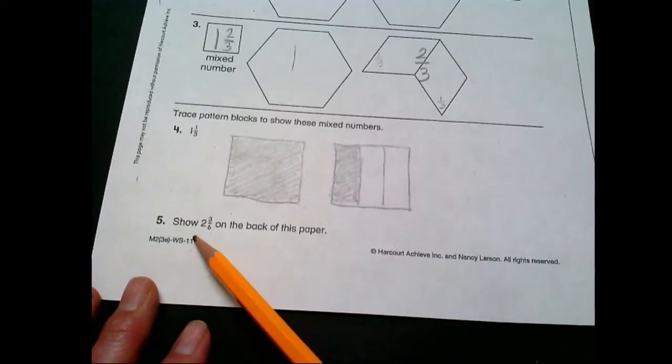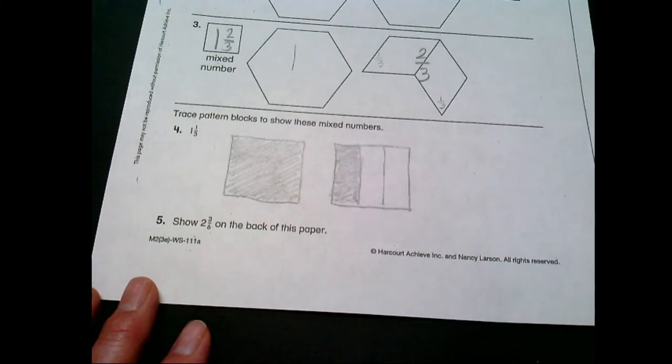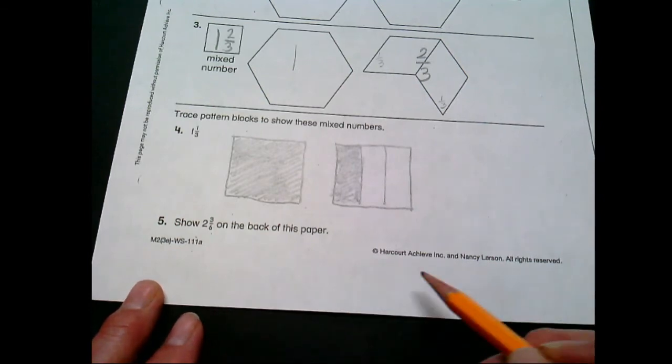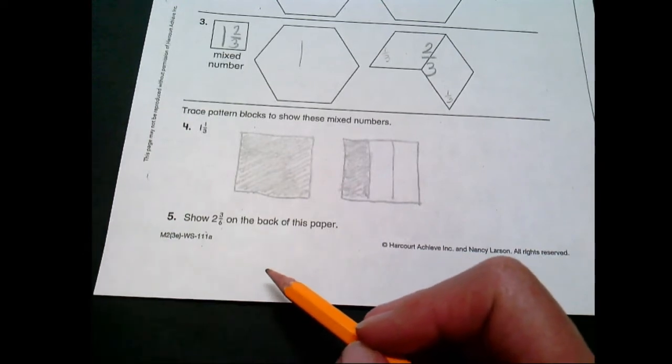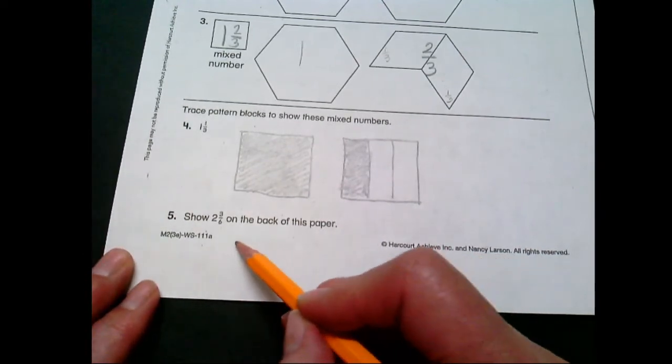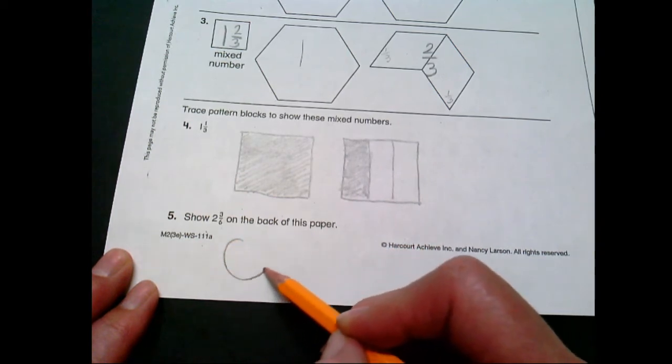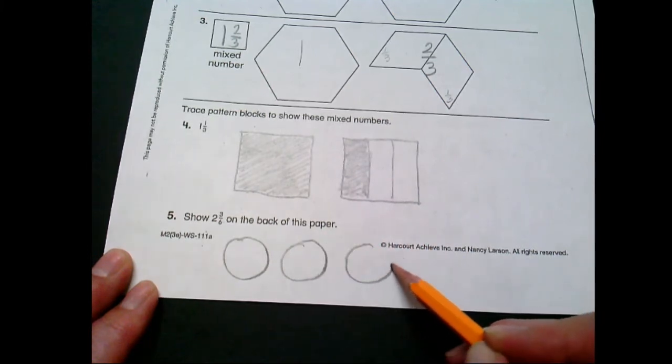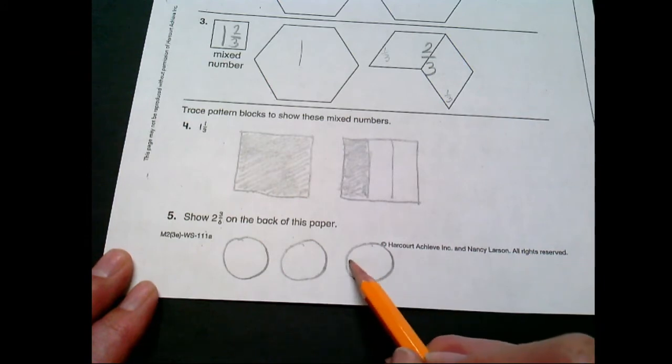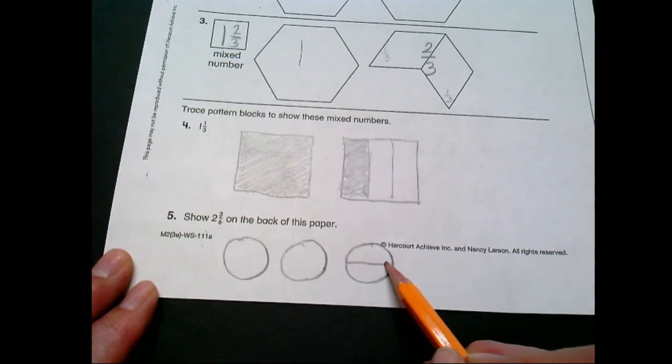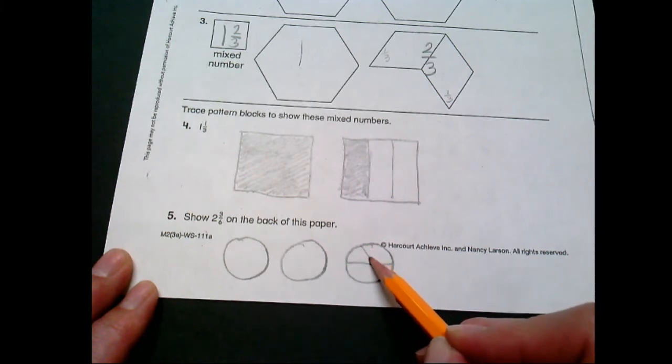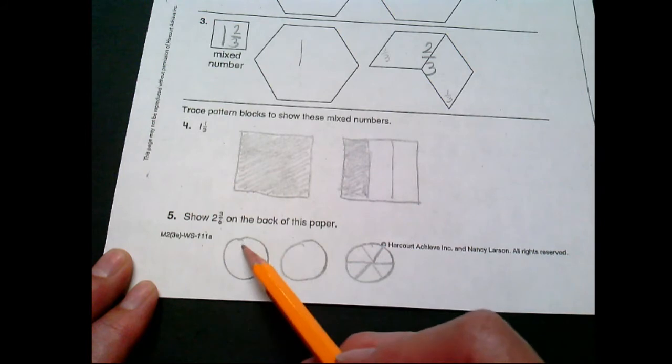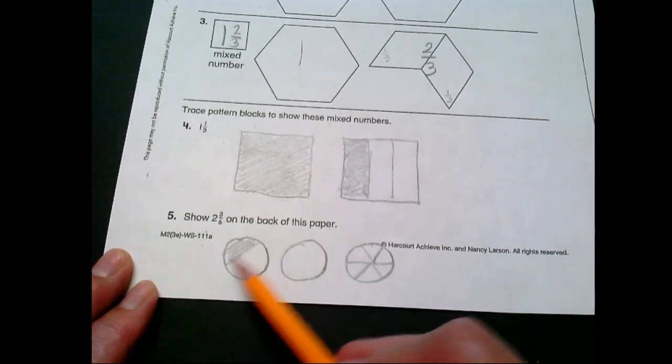And then it says show two and three sixths on the back of this paper. Okay, two and three sixths. You certainly can turn your paper over. I'm going to show you an example right here on the bottom of this page. Maybe you would want to use circles. So we can do one circle, two circles. And again, I'm trying to make my circles as much the same as I can. And to divide a circle into sixths, we make one line across the middle and then we make a V on the top and an upside down V on the bottom. So again, we're going to color in to show that we've got two.